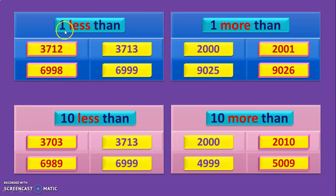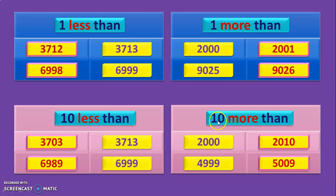The concept is very simple: if it is 1 less than, look at the 1s place and subtract 1. If it is 1 more than, look at the 1s place and add 1. If it is 10 less than, look at the 10s place and subtract 1. If it is 10 more than, look at the 10s place and add 1 — there will be no change in the 1s place. Let us move on to 100 more than and less than.